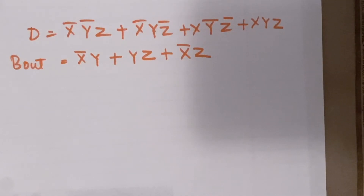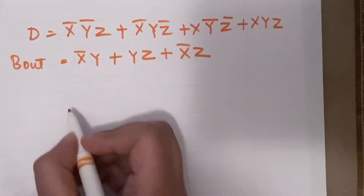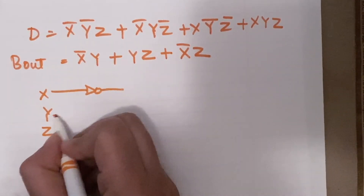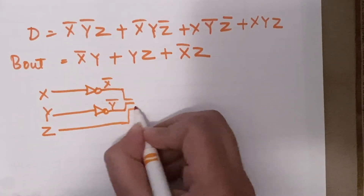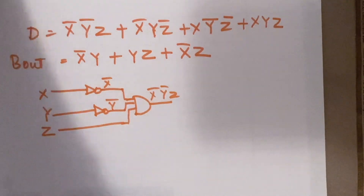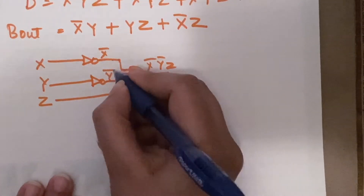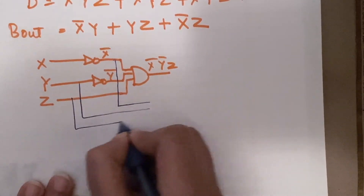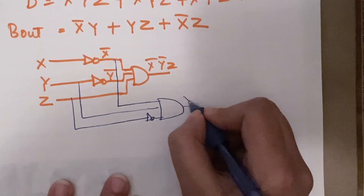Now we will draw the circuit diagram using these two boolean expressions. For D (difference), we take inputs x, y, z and complement them to get x̄, ȳ. The first term x̄·ȳ·z is implemented with an AND gate taking x̄, ȳ, and z. For the second term x̄·y·z̄, we again use x̄ with y and z̄ through another AND gate.